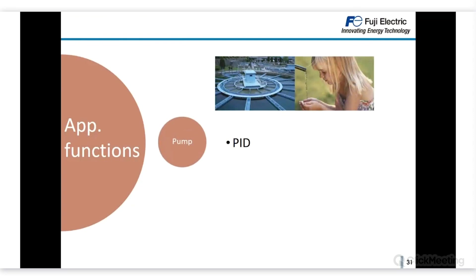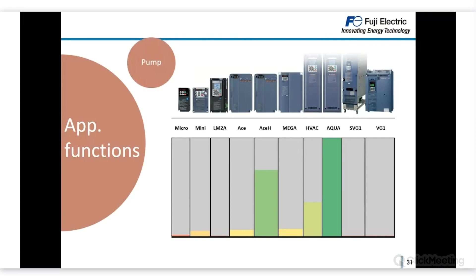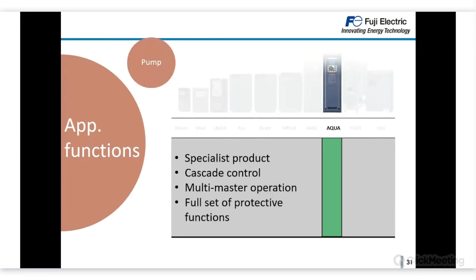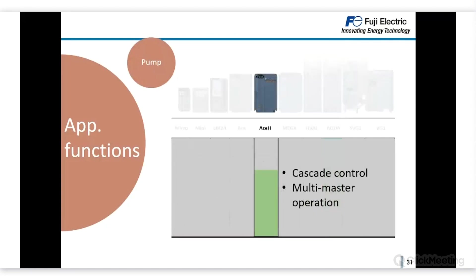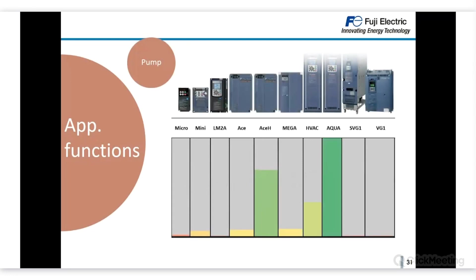For pump applications, key requirements include a strong PID control, protective functions such as dry pump protection, cascade control, and multi-master operation. The most focused product for this application is Frenic Aqua, which has cascade control, multi-master operation, and a full set of protective functions. AceH has a similar working philosophy with cascade control and multi-master operation. HVAC can also be used due to its powerful PID. MEGA, ACE, and MINI have simpler PIDs suitable for basic applications — for instance, with a single-phase supply, ACE with PID and sleep mode could be used.